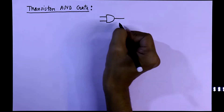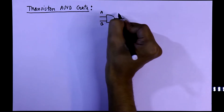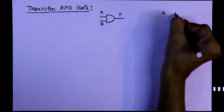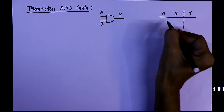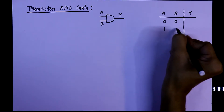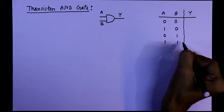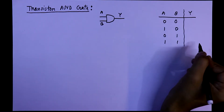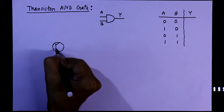This is the symbol of an AND gate. It has two inputs, A and B, and Y is the output. The truth table has four conditions: when both are 0, A=1 B=0, A=0 B=1, and both are 1. We have to find the outputs as we are going to design a two-input AND gate.